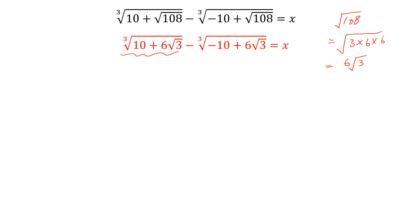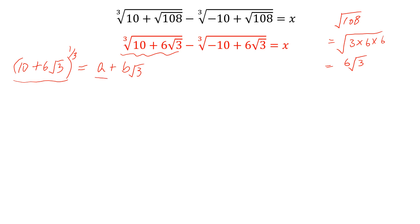Now we take this term. We write this as (10 plus 6√3) to the power 1/3, and this will be equal to A plus B√3. We don't know the values of A and B — how can we find them?